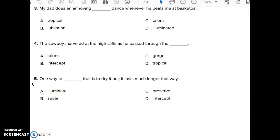Number 5. One way to blank fruit is to dry it out. It lasts much longer that way. A: Illuminate. B: Sever. C: Preserve. D: Intercept.